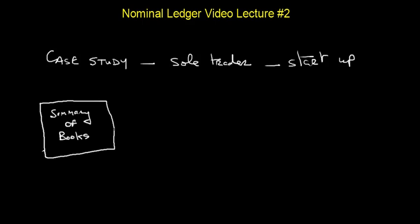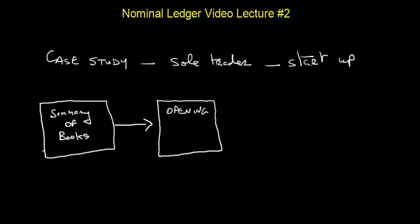The next step is what we call an opening trial balance, which tells us the balances of all the various assets and liabilities at the end of the previous year. Because it's a startup, there's no previous year, so all balances would be zero — this stage is effectively redundant.